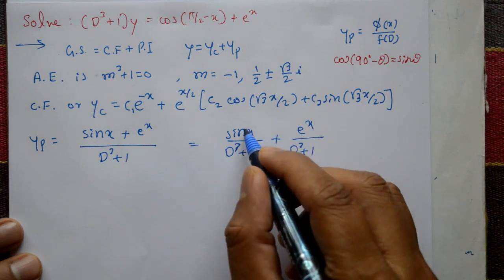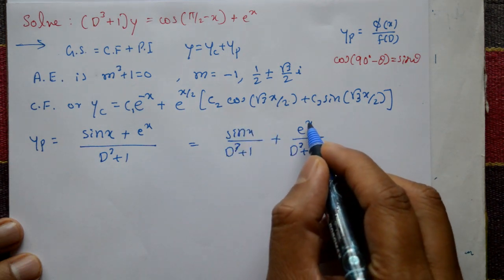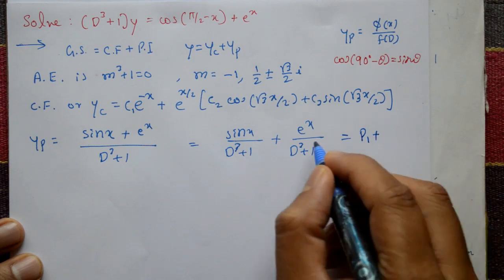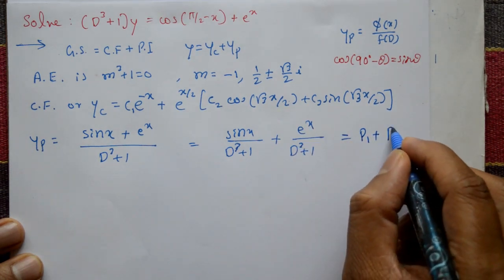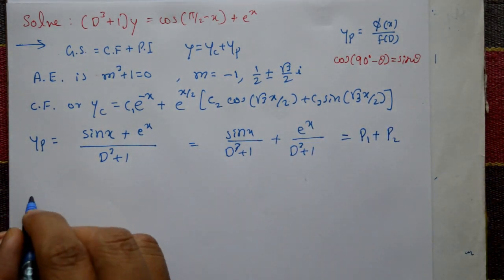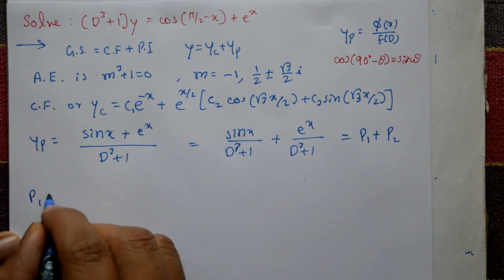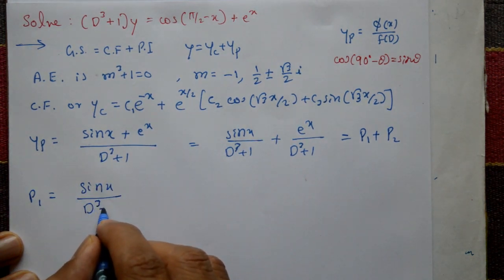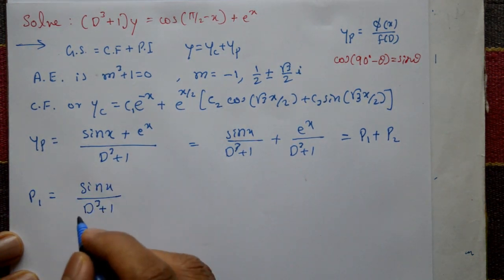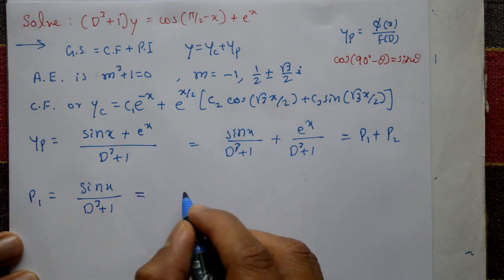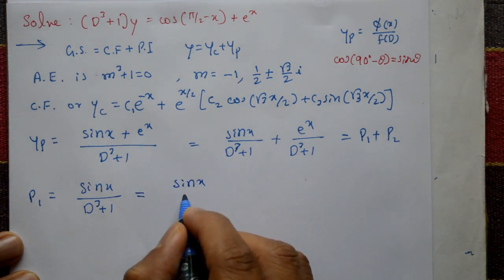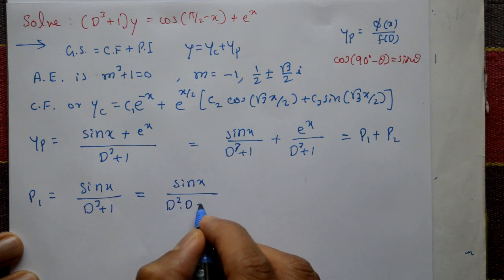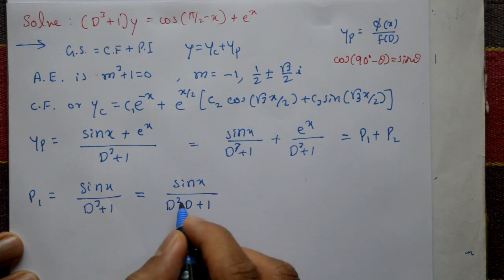There are two types: one is sin x and one is eˣ. Solve them one by one. The first term is P1, the second term is P2. P1 = sin x / (D³ + 1). We can write D³ as D² · D, so the denominator is D²·D + 1.